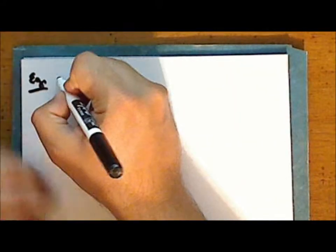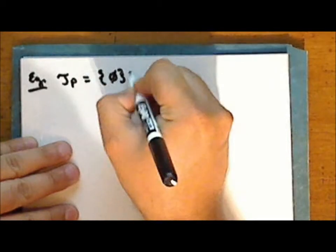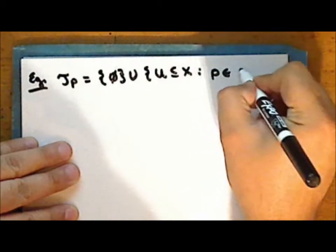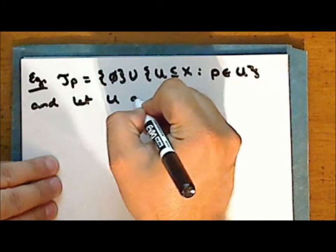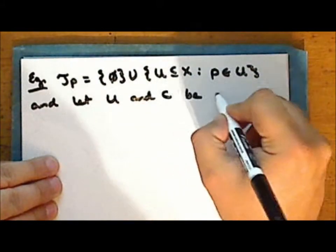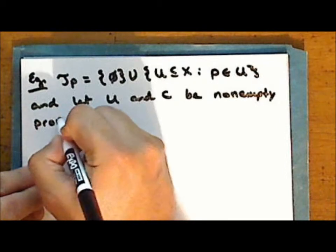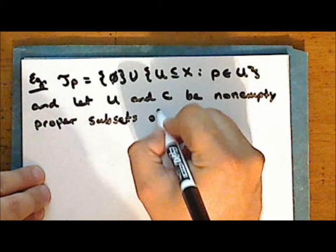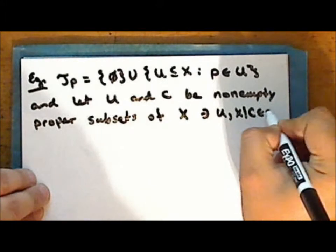Let the set tau sub p be the particular point topology on the set X with the point p the particular point, and let the sets U and C be non-empty proper subsets of the space X, such that the set U and the complement of the set C are in the topology.